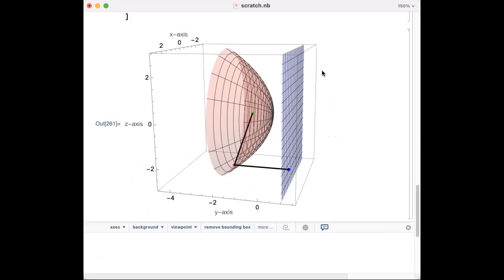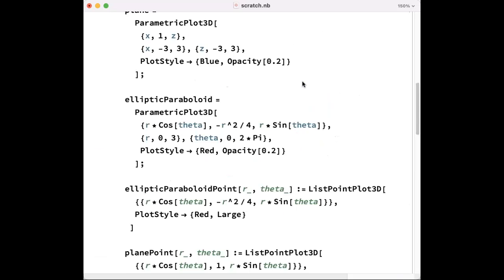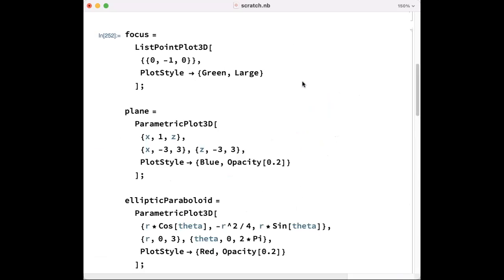So quickly, how did I produce this graphic? You can watch this video and read through these commands if you'd like to produce it yourself. Well, first, I'm going to plot the point Q. I'll use the ListPointPlot3D command to plot a list of points. It only has one point in the list: (0, -1, 0). Let's make that point green and large. I'll call that the focus. It turns out to be the focus of the elliptic paraboloid.